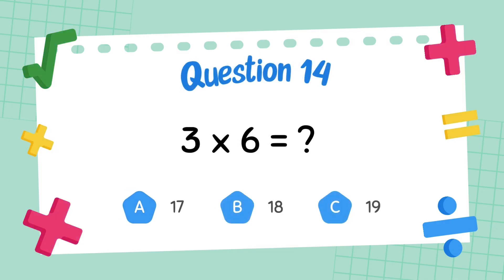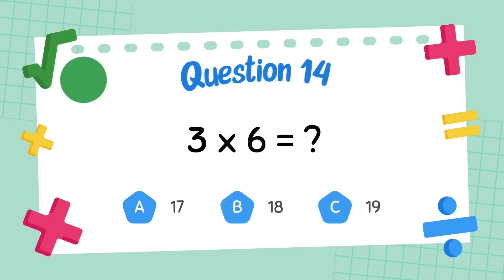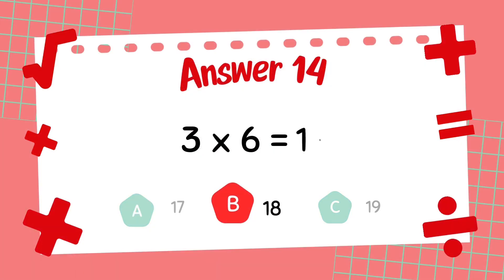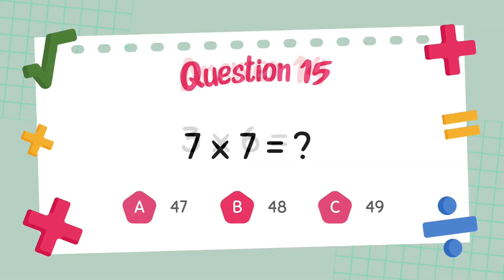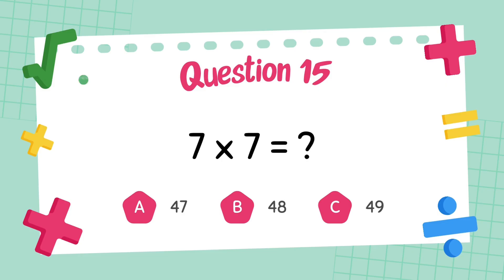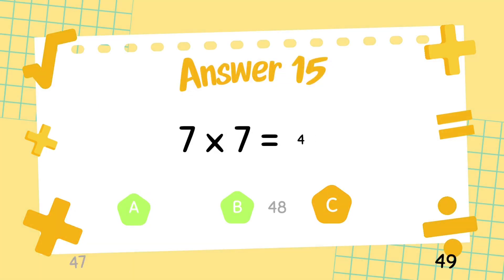What is 3 multiply 6? The answer is 18. What is 7 multiply 7? The answer is 49.